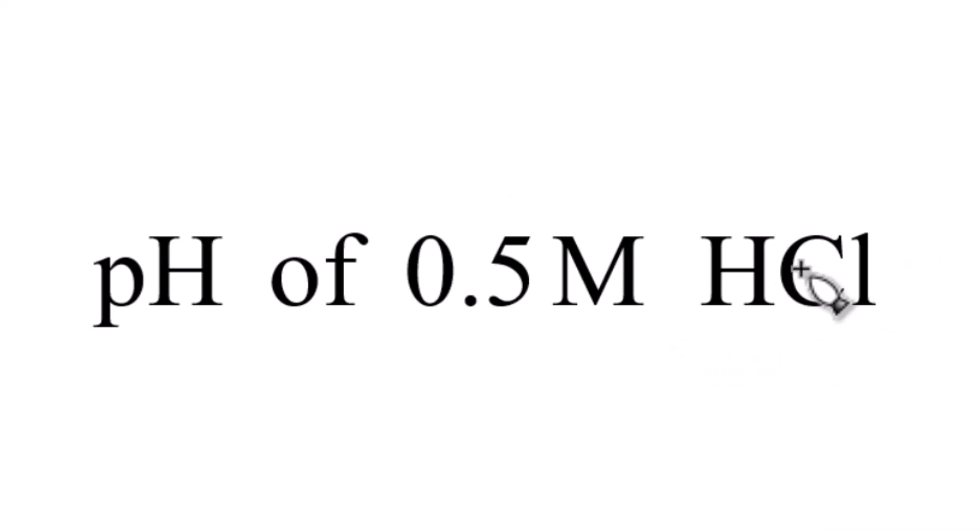First off, HCl is a strong acid, and that's one you just need to memorize. What that means is it's going to dissociate completely. So we'll have H plus ions and Cl minus ions.